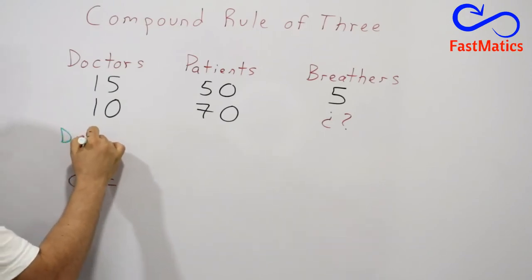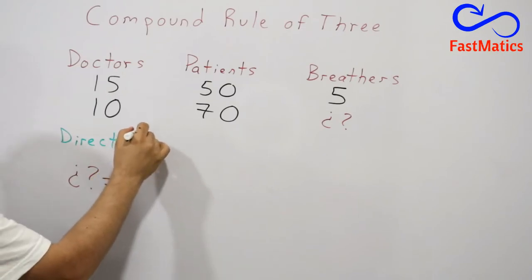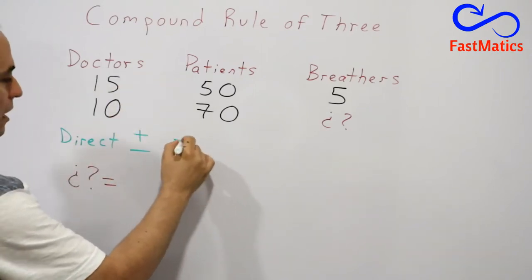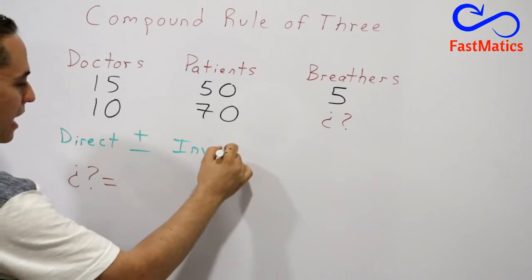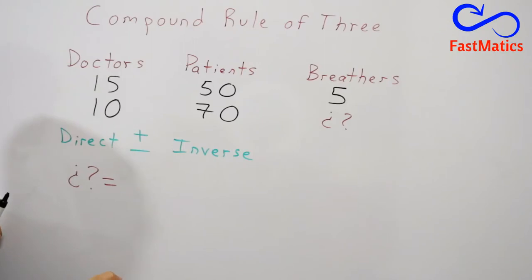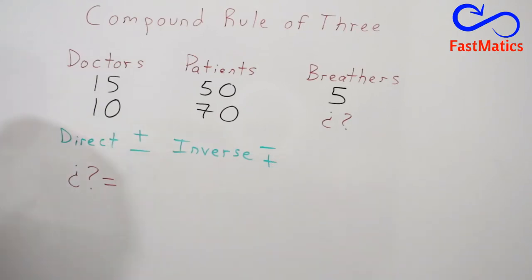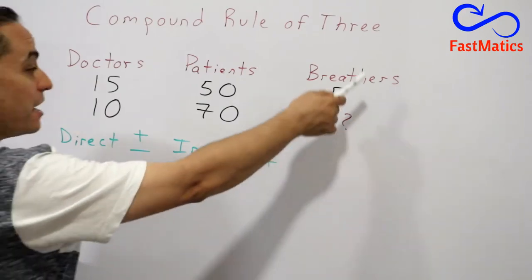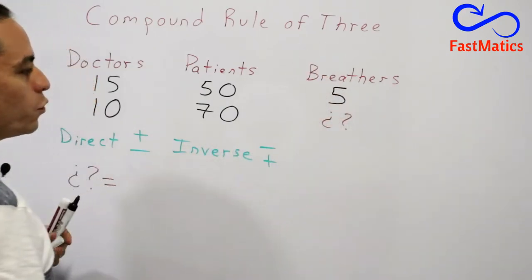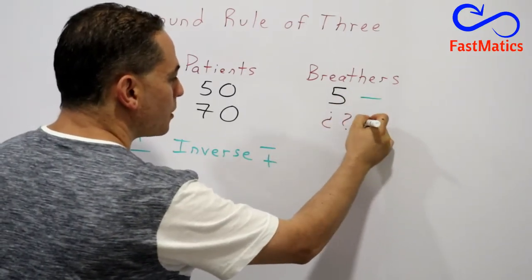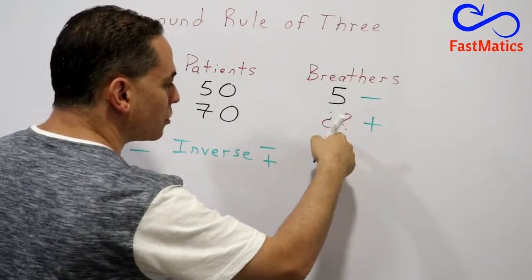If you have a direct rule of three, you are going to write the plus sign on top and the minus sign on the bottom. But if you have an inverse relation, you are going to flip those signs: minus here and plus on bottom. Also, where we have the unknown value, we are always going to write the minus here and the plus where you have the unknown value.